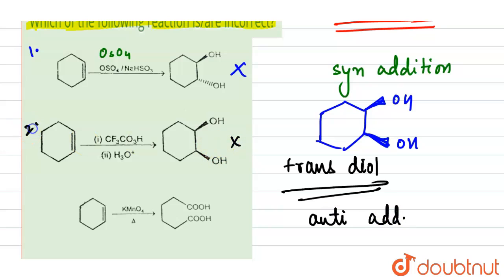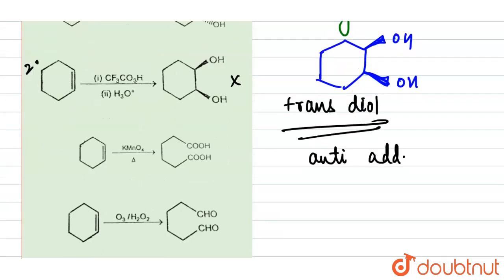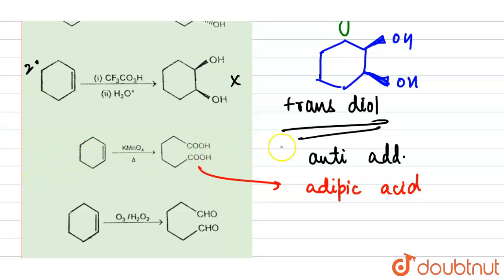Next, cyclohexene reacts with KMnO4 with heat. Here we have oxidation, giving the formation of —COOH groups on both ends, which is adipic acid. This reaction is correct, so it will not be part of our answer.